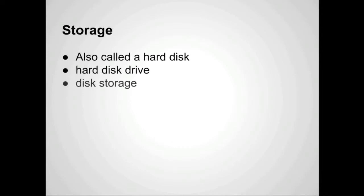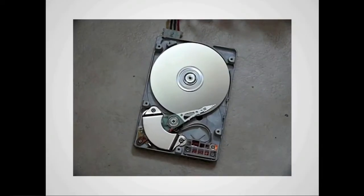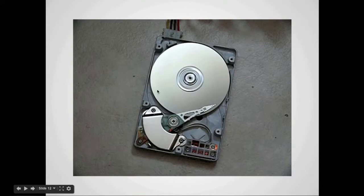Now let's talk about storage, also called hard disk space, hard disk drive, disk storage, or abbreviated HDD. They're all basically the same. A hard drive looks like this — without the cover on it. There's a really powerful neodymium rare-earth magnet here, with another one underneath. These use magnetic impulses to encode magnetic signatures on the disk. If you remember cassette tapes, that's kind of how those worked too.